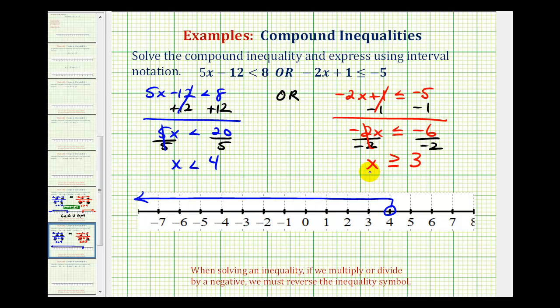So notice that 3 does satisfy this inequality because 3 is greater than or equal to positive 3. So to show that 3 is in the interval, we make a closed point on 3. And then for values greater than positive 3, we have an arrow to the right.